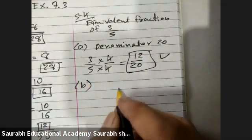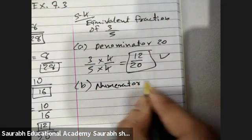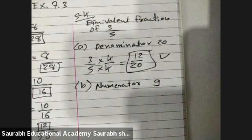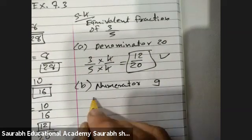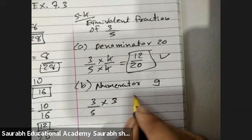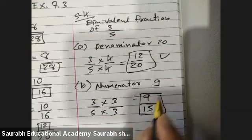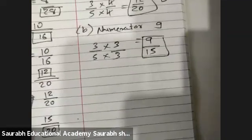Second question is numerator 9. Three upon five, the numerator should be 9. Three threes are 9. So denominator is five threes are 15. So what is the answer? 9 upon 15.